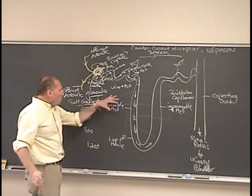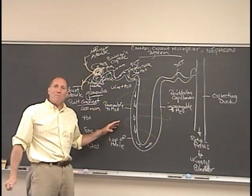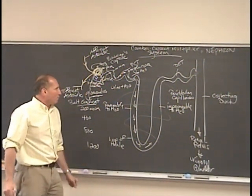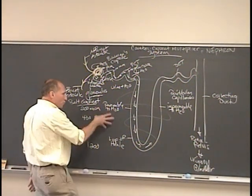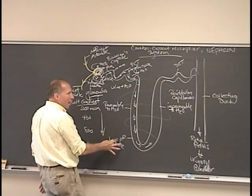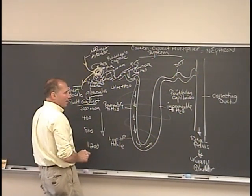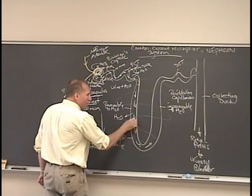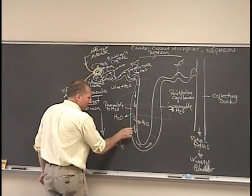Which means that you form this high hypertonic environment that is outside of the loop of Henle. Because the salt concentration increases as you go down and is greater on the outside than inside the loop of Henle, you end up having the water come out of the filtrate here.